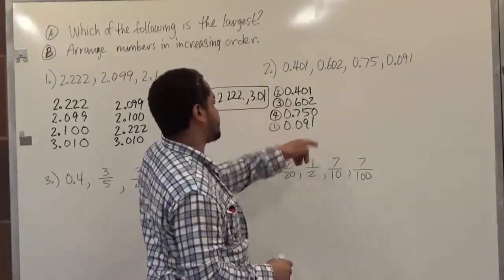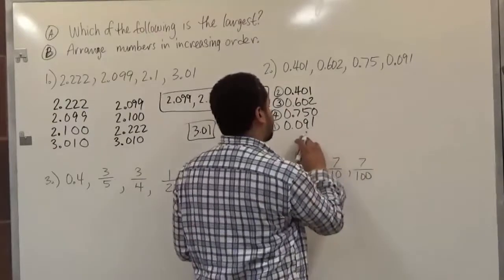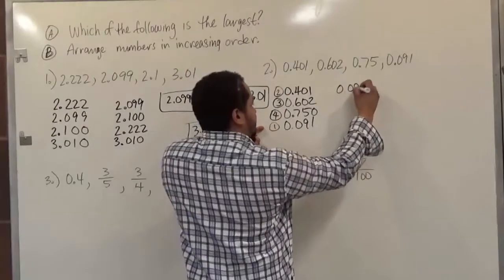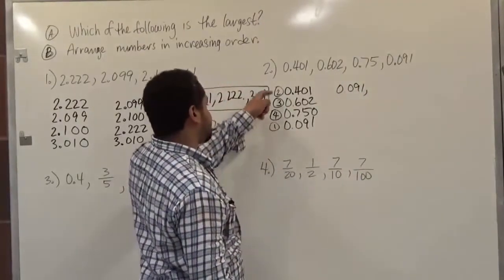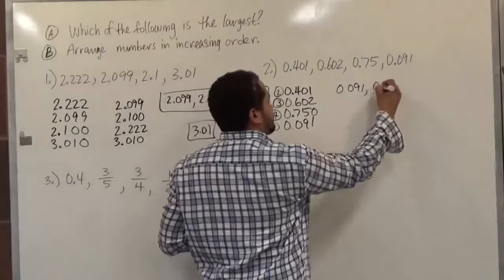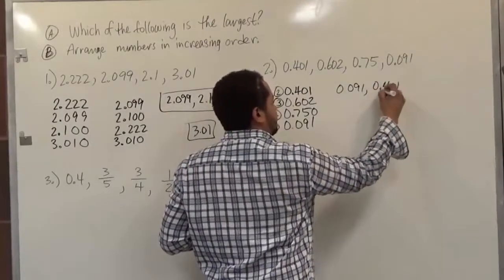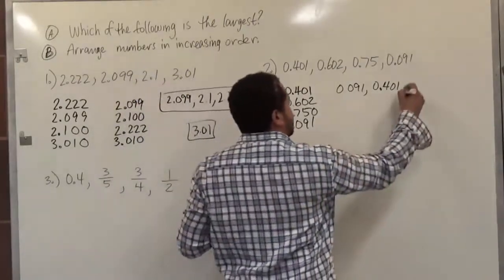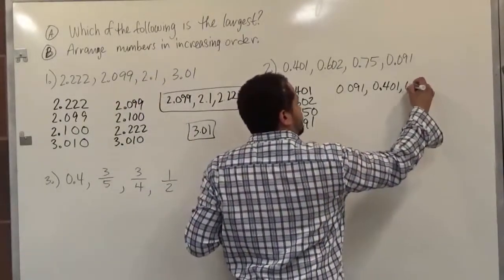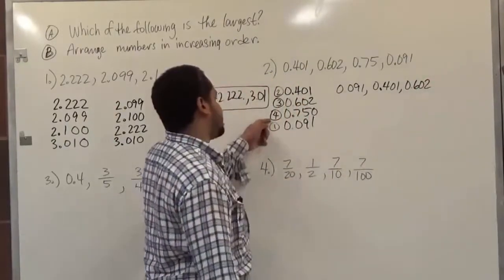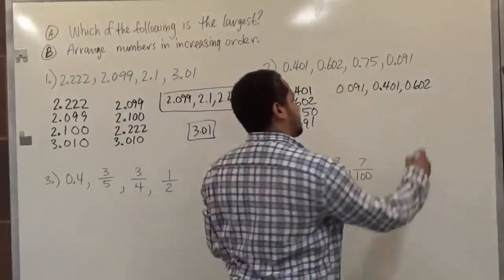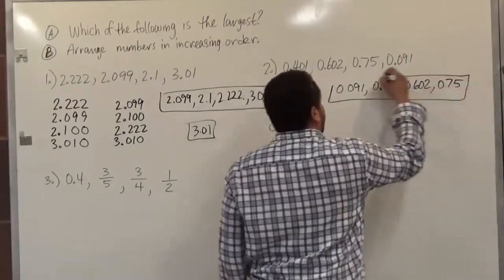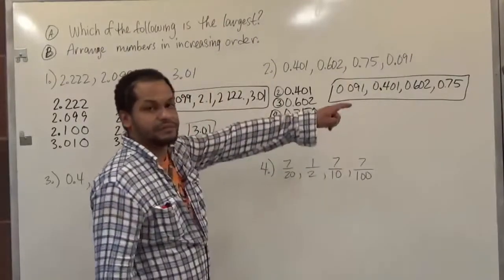That helps us organize this faster and more efficiently. So let's rewrite these in ascending order. The first number would be 0.091, the second would be 0.401, the third would be 0.602, and the final number is 0.75. Once we have it in order, it's easy to find that the largest number is 0.75.